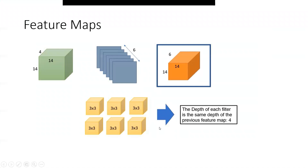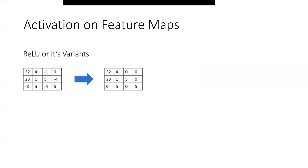In the previous slide, we studied how feature maps are created based on the number of filters we are using. When these important features are created, this is the output after passing through the convolutional layer. When the input size is converted into the output image containing important features, you can see there are some pixels having a negative value. This whole output layer, which has been passed through the convolutional layer, will now be passed through the activation function.